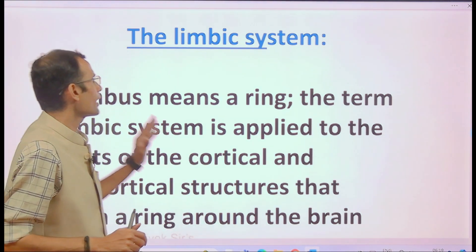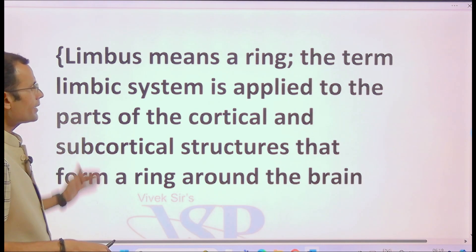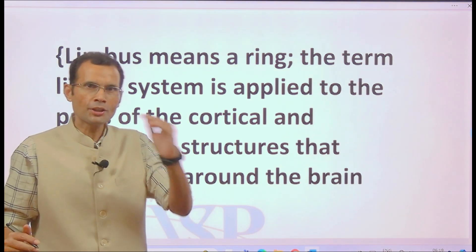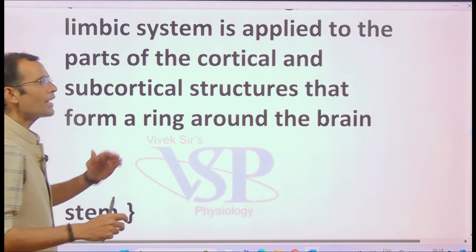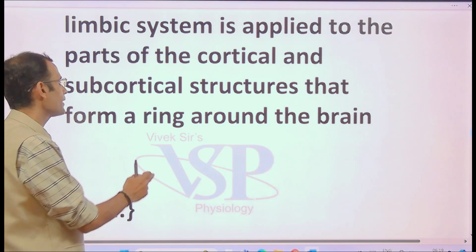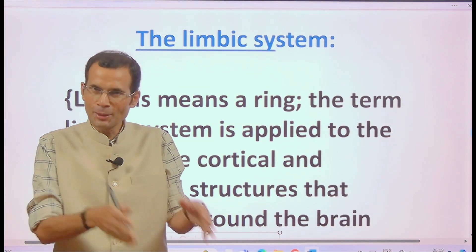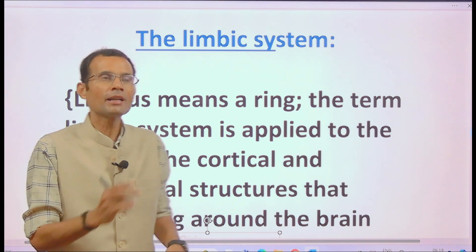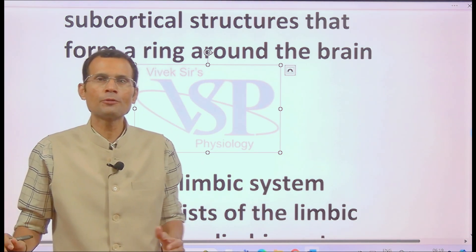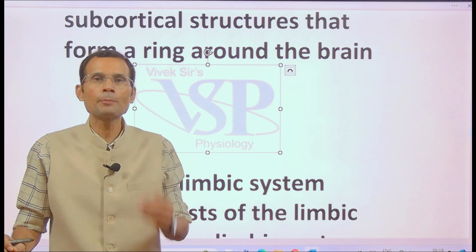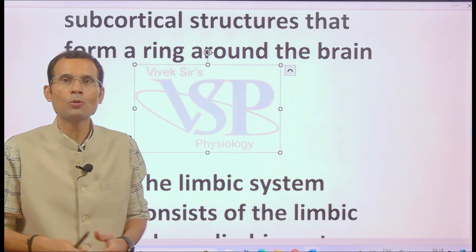First of all, 'limbus' means a ring. Therefore, the term 'limbic system' is applied to the cortical and subcortical structures which form a ring around the brainstem. Limbic does not mean 'limbs' as in four limbs or hind limbs — limbus means a ring.